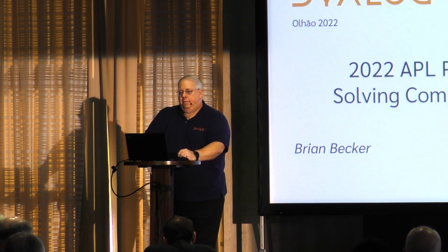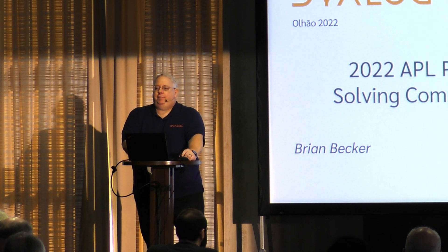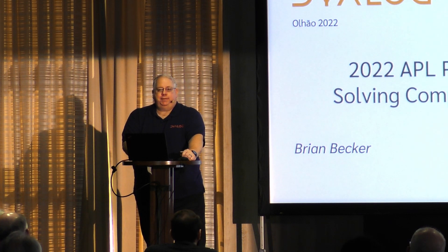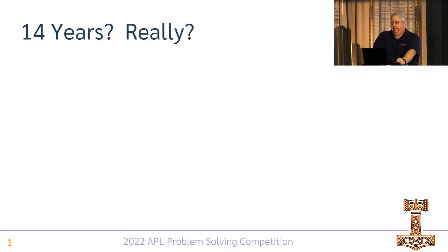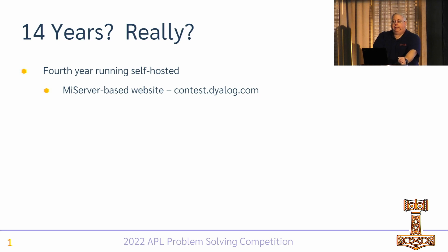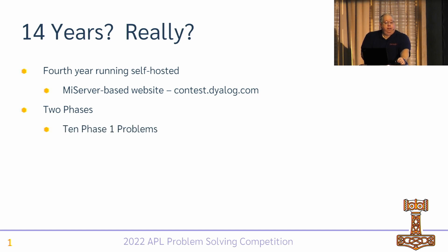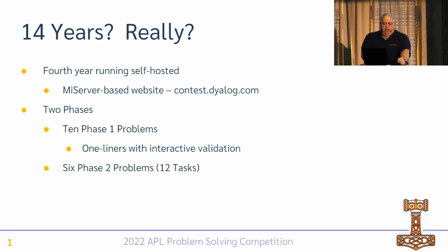Thank you, Gide. This year we held the 14th annual APL problem-solving competition, and this is our fourth year where we've actually hosted the contest website ourselves — a MyServer-based website at contest.dyalog.com. We have two phases to the competition: the first phase is 10 problems that should be solved in a fairly simple one line of APL code, and then this year we had six phase two problems consisting of 12 tasks.